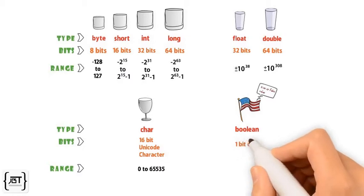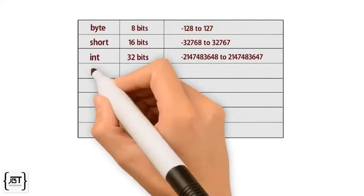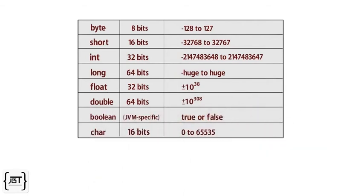Boolean represents one bit of information with only two possible values true and false. Boolean is used for simple flags that track true or false condition. The size of a Boolean is not precisely defined. Here is a summary of the different primitive data types we have discussed and their bit sizes as well as range of values.